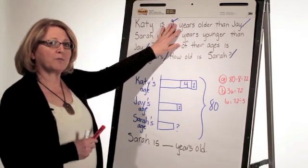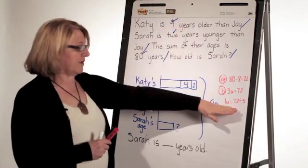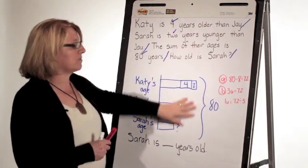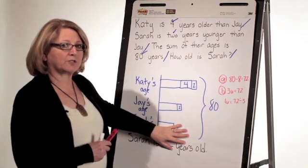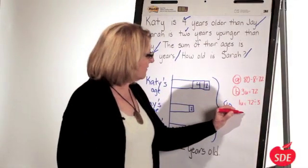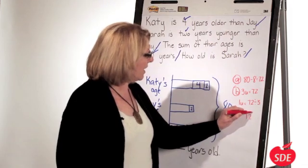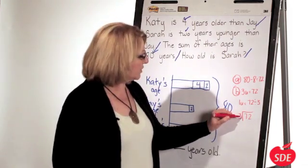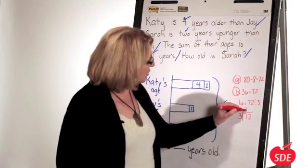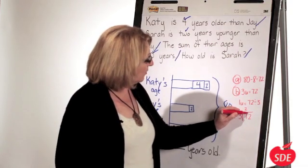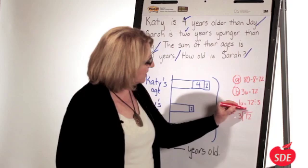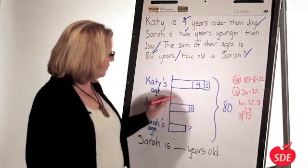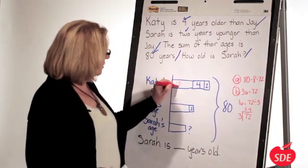You see how Singapore Math not only is very pre-algebraic, but it turns this model into a visual picture. Now I've got to divide 72 by 3. I'm going to use short division. 3 goes into 7 twice, that would be 6, with 1 left over. 3 goes into 12 four times. That means 1 unit equals 24.